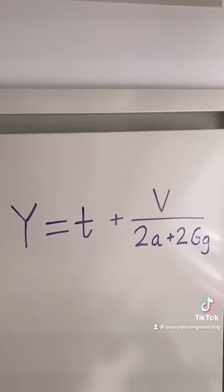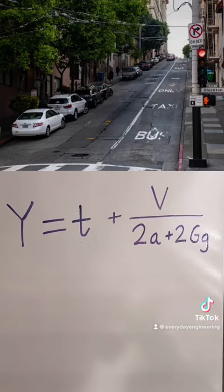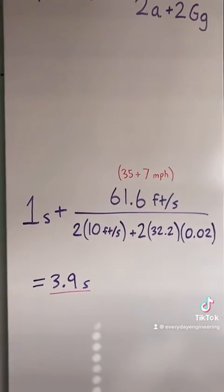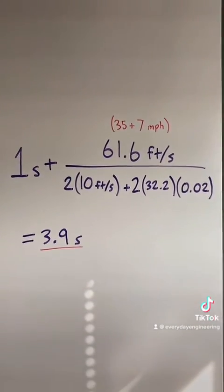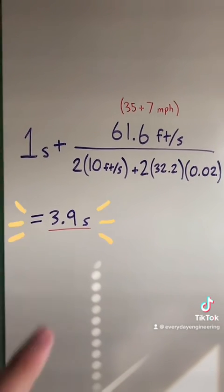It's going to be easier to stop on an uphill than on a downhill, so the yellow doesn't have to be as long. Let's say you have a 35 mile per hour road — plug in all your numbers in feet per second, and there is your yellow time.